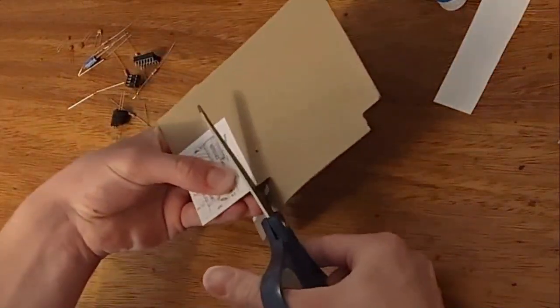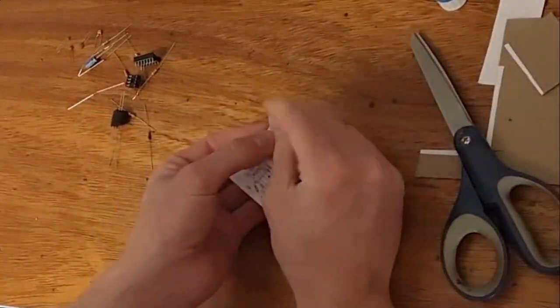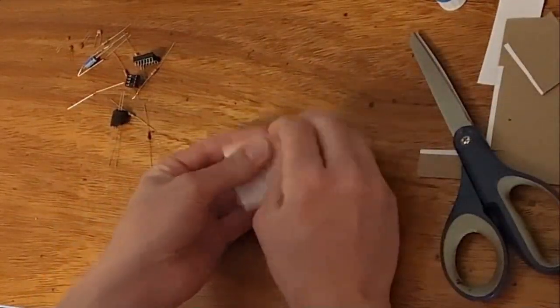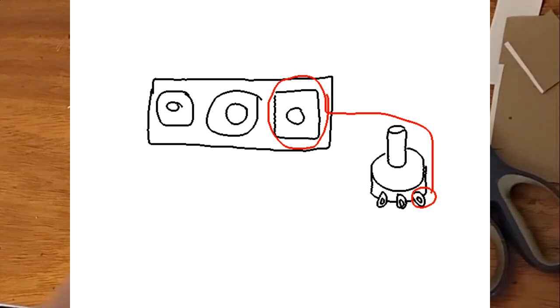With the potentiometers, the way I have the silkscreen image oriented, the rightmost, or like the square hole is the right lug of the potentiometer. Now that I'm thinking about it, I'll probably just put a diagram on the PDF, that'll make things easier.